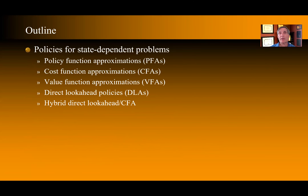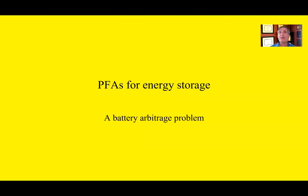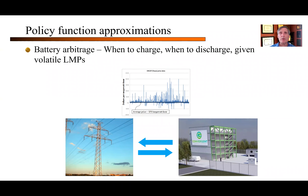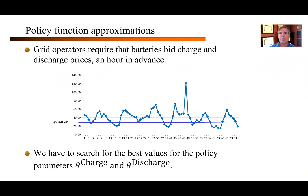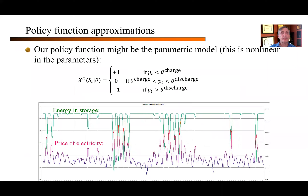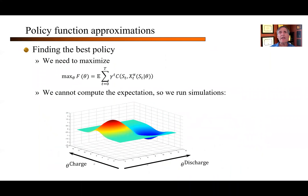So, policies for state-dependent problems — I'm going to cover all four classes and then a hybrid. Starting with PFAs. Policy function approximations are simple analytic examples. Let's take our simple energy storage problem. We're going to take a basic policy of buy when the price of electricity goes below one point, and sell when it goes above another point. So I have a simple policy function approximation. This is the mathematical formula. Here's a simulation where we see the prices going up and down. As the prices go up, I sell into the grid and the inventory in the battery drops off, and then I recharge. My challenge is figuring out what this two-dimensional theta should be. I can't compute the expectation, but I can run simulations — so I pick two values and run a simulation. That will give me a noisy estimate, and it's the noise that makes the problem challenging.